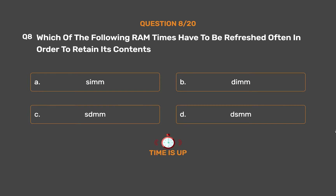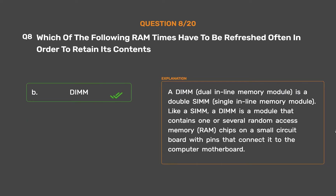The correct answer is Option B: DIMM. A DIMM, dual inline memory module, is a double SIMM, single inline memory module. Like a SIMM, a DIMM is a module that contains one or several RAM chips on a small circuit board with pins that connect it to the computer motherboard.